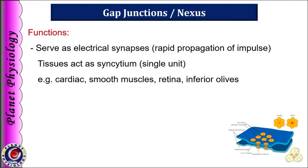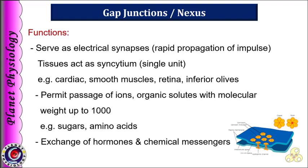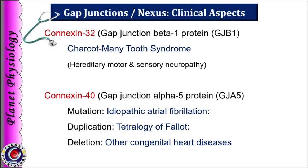The functions of gap junctions: they serve as electrical synapses, helping syncytial tissues like cardiac and smooth muscles in rapid propagation of impulse. Gap junctions also permit direct passage of organic solutes from one cell to another — for example, sugars or amino acids with molecular weight up to 1000. They also help in exchange of hormones and chemical messengers. Abnormalities in connexin proteins are associated with various diseases. In Charcot-Marie-Tooth syndrome, connexin-32 is defective, characterized by progressive loss of muscle tissue and touch sensation across the body. Abnormalities in connexin-40 are associated with idiopathic atrial fibrillation, tetralogy of Fallot, and other congenital heart diseases.